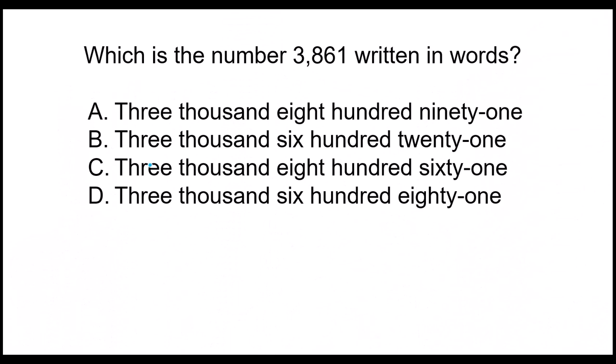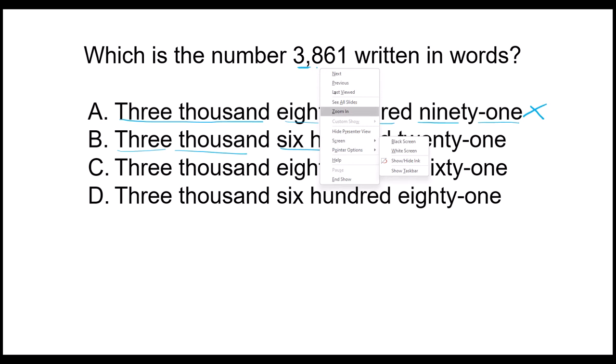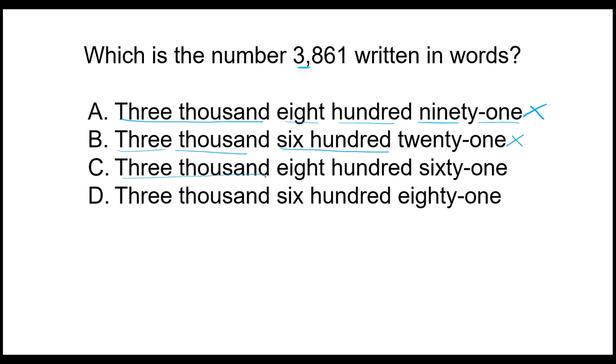Which is the number 3,861 written in words? 3,000, I see 3,000 here and I see 891. So that is not correct. Let's read the next one. 3,000, 3,600. No, it's not 600, it's actually 800. So automatically this one is not correct as well. Let's keep going. 3,000. Yes, 800. That's correct. The 8 is in the hundreds place. 61. Very good. Now let's just finish it off just to be sure. 3,600. See, that's wrong because the 6 is not in the hundreds place. It's actually the 8. So this one is also incorrect. I have found my correct answer and it is C. Well done.